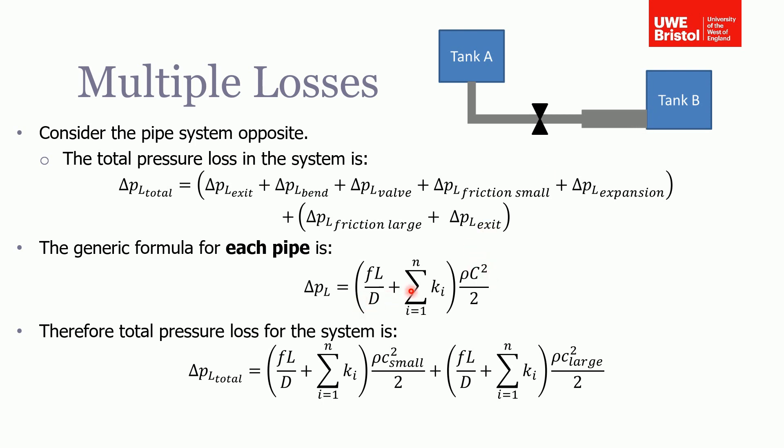So this is a generic formula. Therefore, for our system, the total pressure loss is the friction in the small pipe plus the sum of the minor losses, which is the exit, the bend, the valve, and also the expansion—because just remember we're using the fastest velocity, therefore the upstream velocity—all times by the density and the velocity in the smaller diameter pipe.